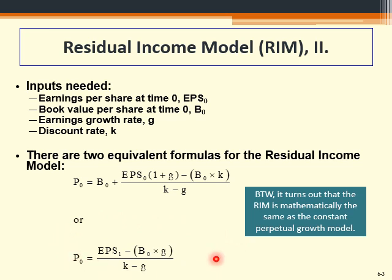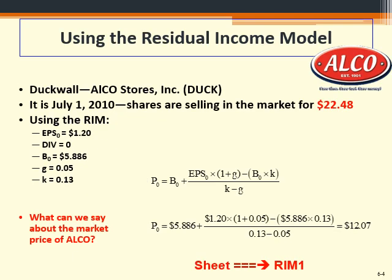The parameters in this equation are straightforward. EPS with subscript zero stands for the current earnings per share — what the company has actually reported. B stands for book value per share, which is total equity divided by the number of shares. We also have G, the earnings growth rate, and K, the discount rate, also referred to as the required rate of return on investment.